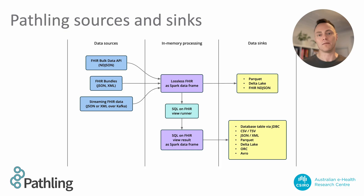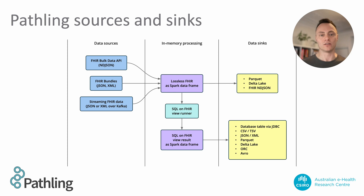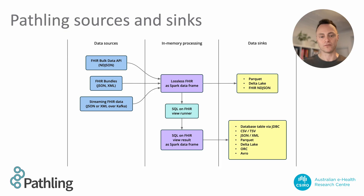Pathling can take data in bulk FHIR NDJSON format, FHIR bundles, or as a stream of events over Kafka. Pathling then converts this data to a lossless data frame format, which can be optionally persisted using Parquet or Delta Lake tables. The SQL on FHIR ViewRunner converts data from this lossless format to a view result data frame. The executed view can be persisted using any of the formats supported by Apache Spark, including relational database tables, CSV, Parquet, and other popular formats.